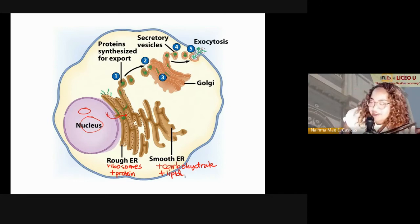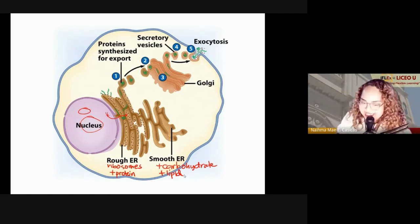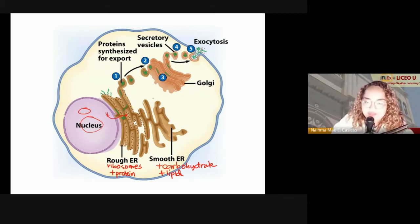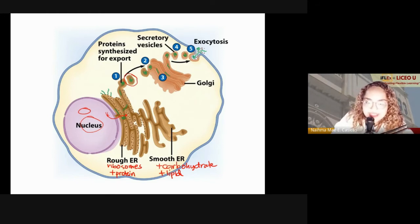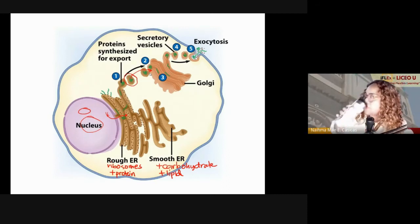Think of the Golgi apparatus as your packaging center — like a courier service. When the product arrives, the Golgi apparatus packages it securely, and can also add any missing components. Once the package is secure, the Golgi apparatus places it in a secretory vesicle.